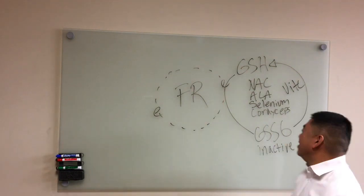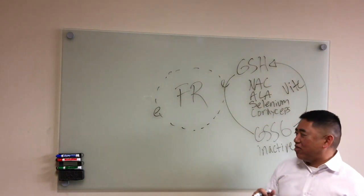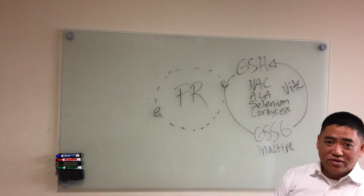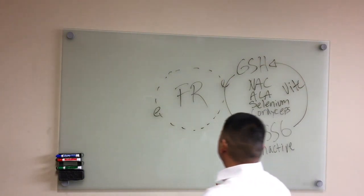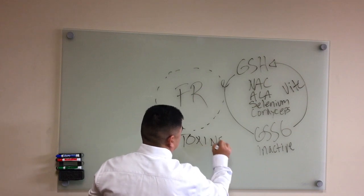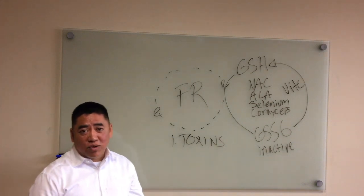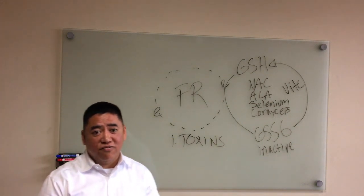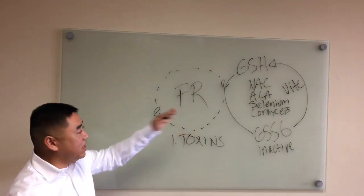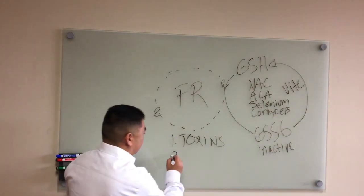Now what are some of the things that can basically deplete glutathione in our cells? Number one, toxins. Toxins are basically from our environment, right? Basically the air that we breathe, the water that we drink, the pesticides in our food. That creates inflammation or minimizes glutathione inside the cell.